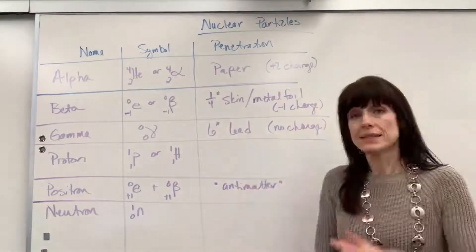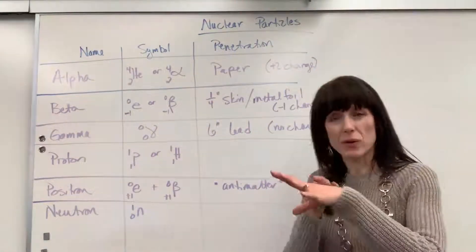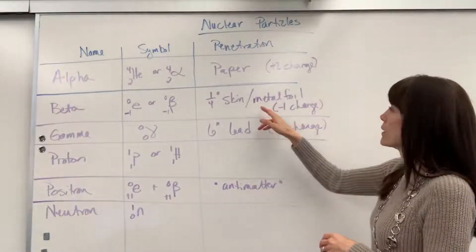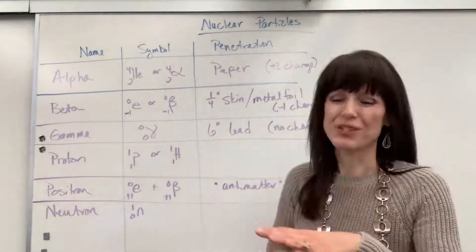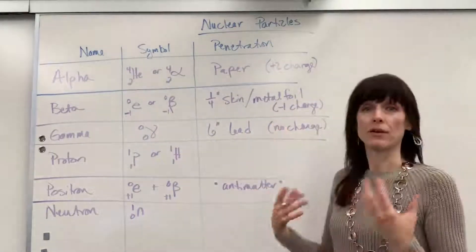Now, the penetration on the beta particle is a little bit more powerful, a little bit stronger than the alpha particle. It could go through about a quarter inch of your skin. It can go through your skin or be stopped, I should say. It would be stopped through a quarter inch of skin or it could be stopped by metal foil.